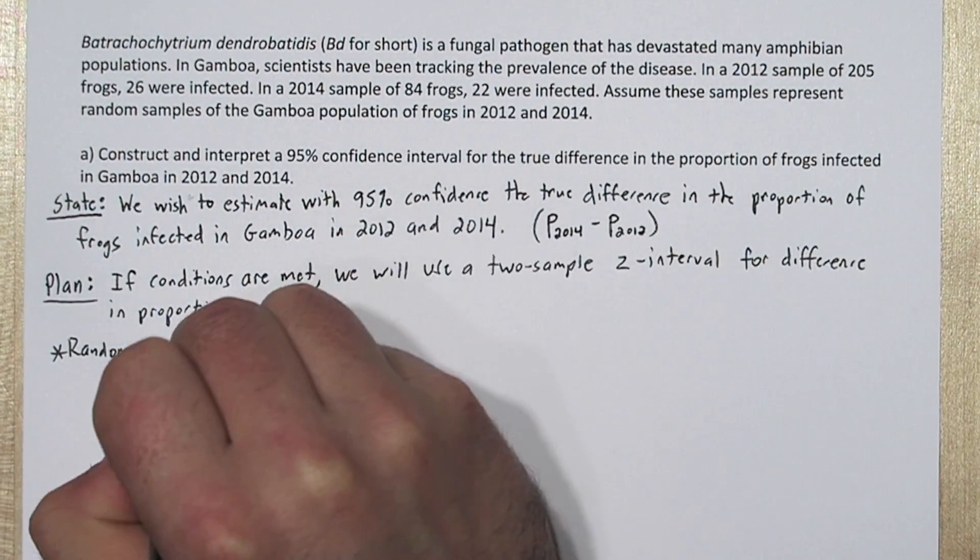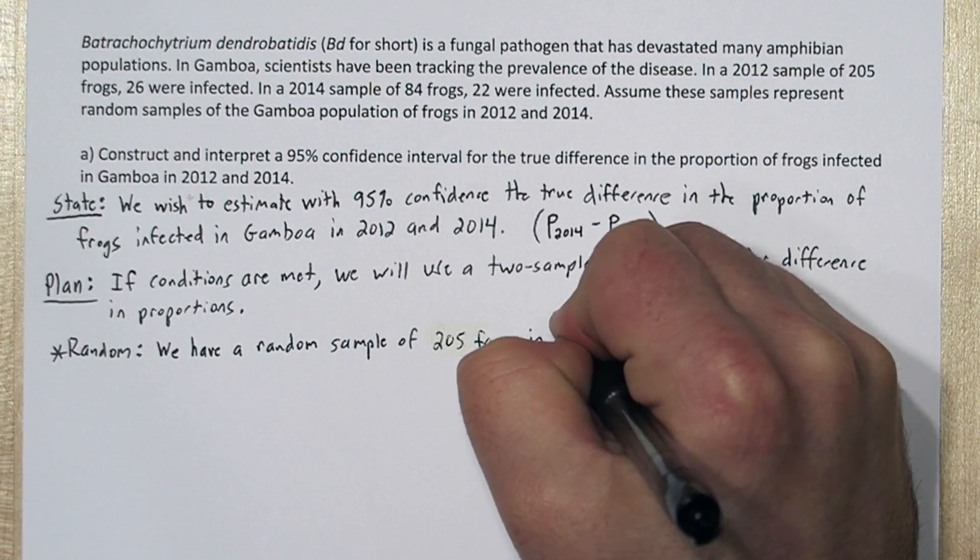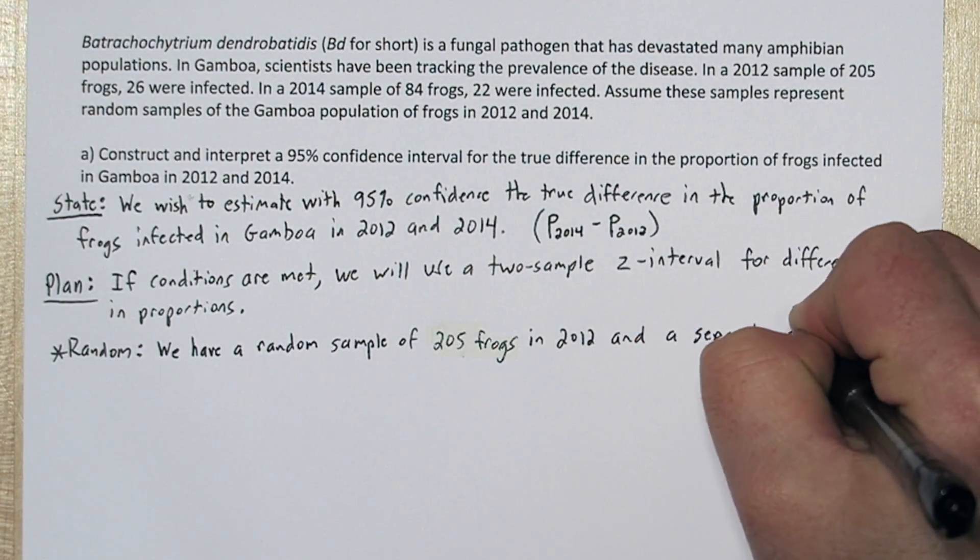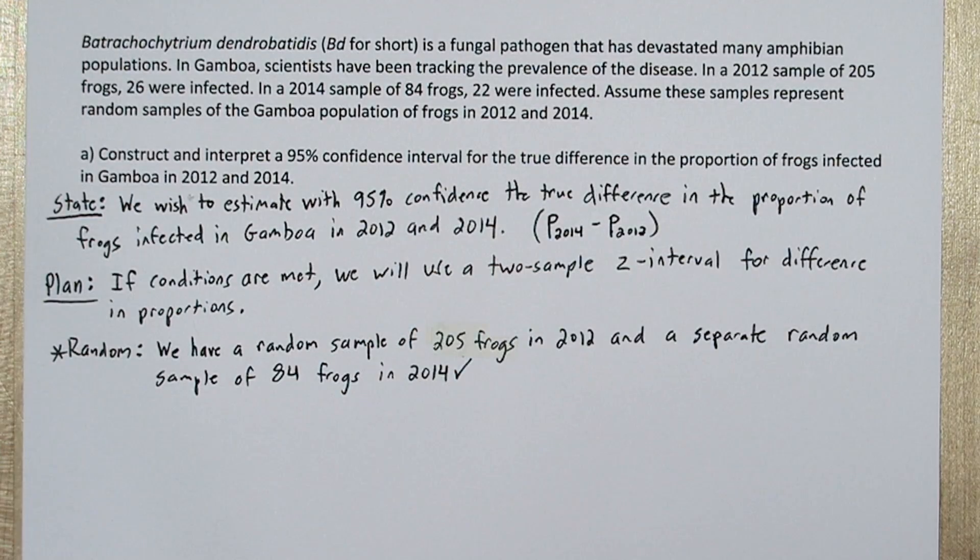For the random condition, we have a random sample of 205 frogs from 2012 and then a separate random sample of 84 frogs from 2014. So that condition is met.